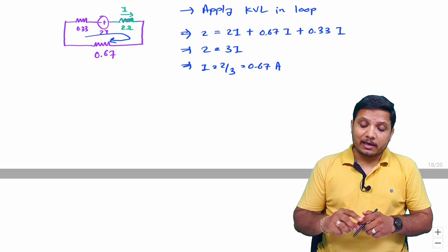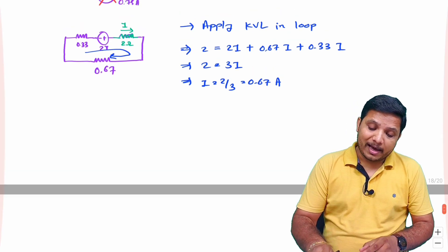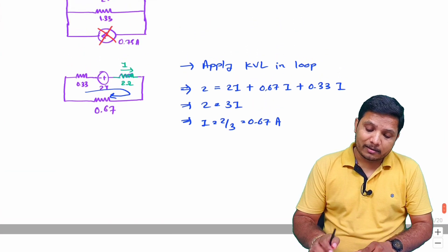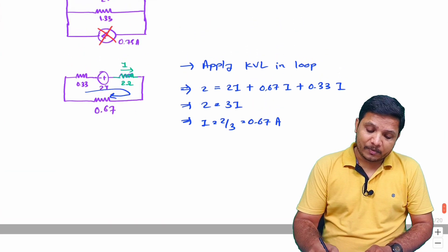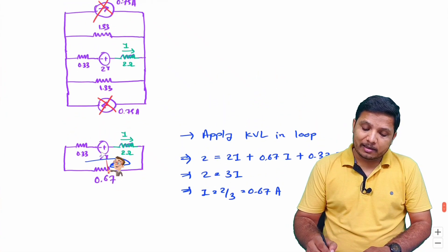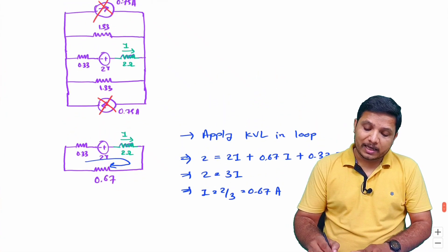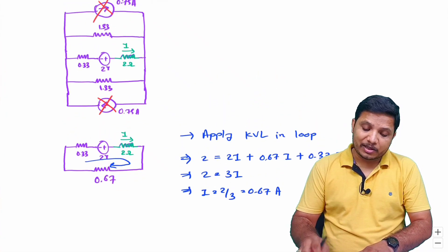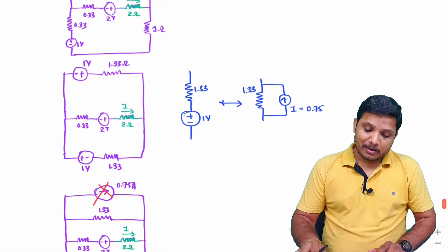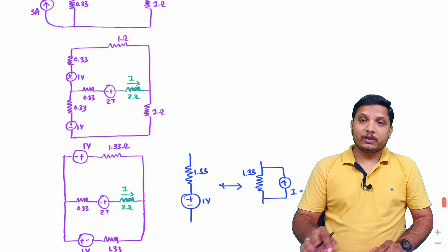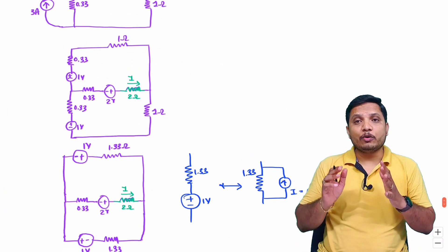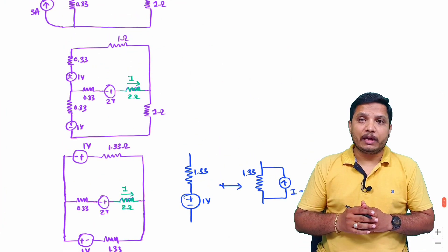So the current passing through the 2-ohm resistor is 0.67 amperes. This is how the circuit was resolved and minimized by using network manipulation rules. You will have to do practice along with me.